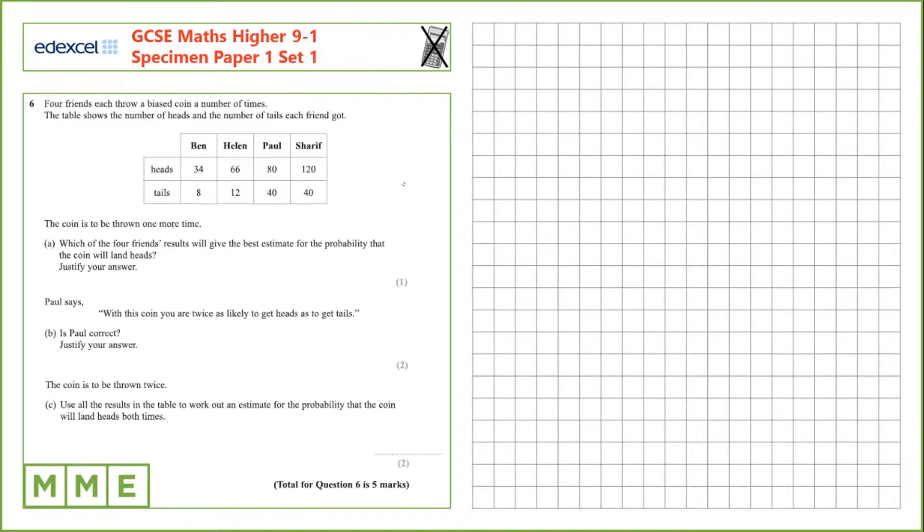The coin is to be thrown one more time. Which of the four friends' results will give the best estimate for the probability that the coin will land on heads? The best estimate is the friend who threw the coin the most times, who did the most trials—that's Sharif. And the reason is that that's the most trials, so you'll be closer to the actual probability.